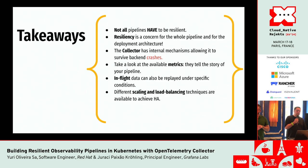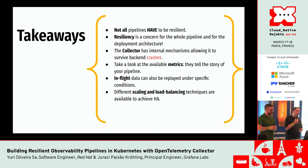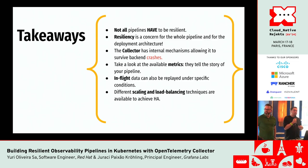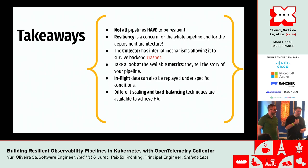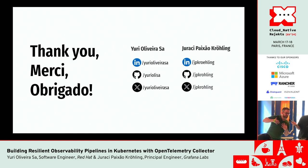Key takeaways: not all pipelines have to be resilient — it may be fine not to be resilient in your case. Resiliency is a concern for the whole pipeline and the whole deployment architecture. The collector has quite a few internal mechanisms allowing it to survive backend crashes or connection problems. Take a look at and get familiar with those metrics — they tell you the story of your pipeline. In-flight data can also be replayed under certain conditions if data is on disk. Different scaling and load balancing techniques are available to achieve high availability.